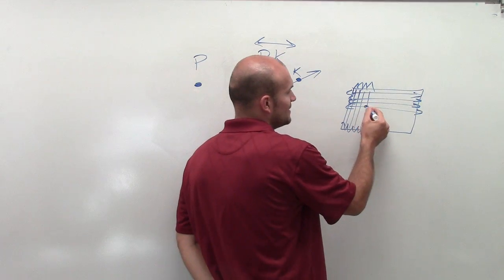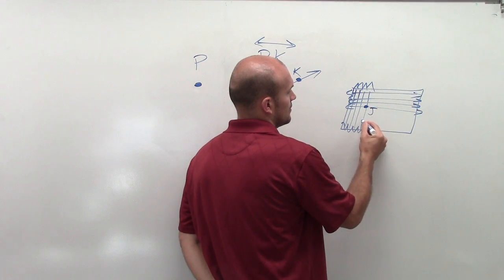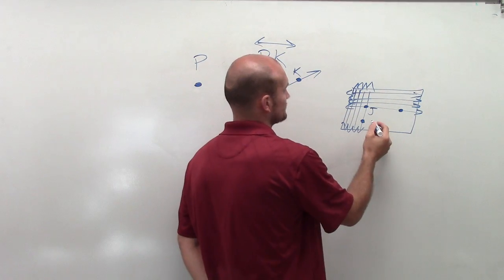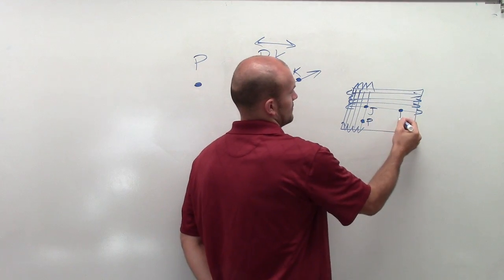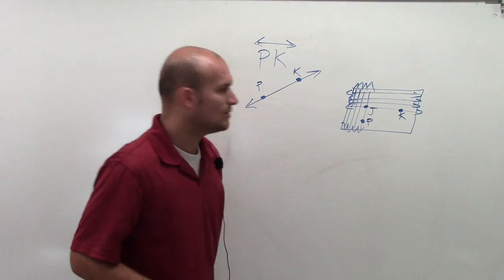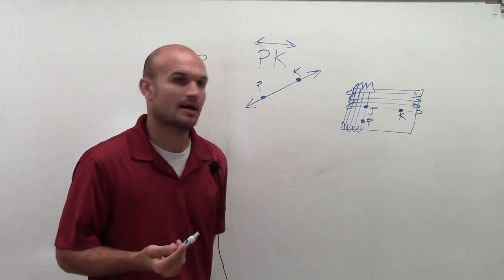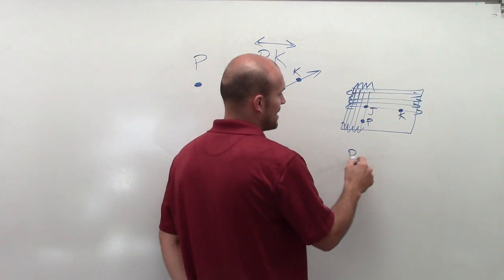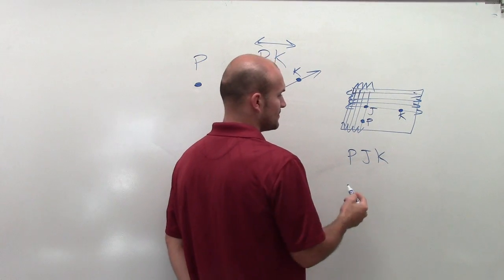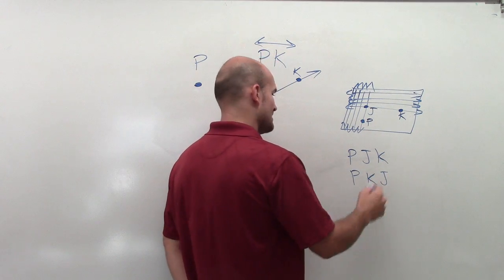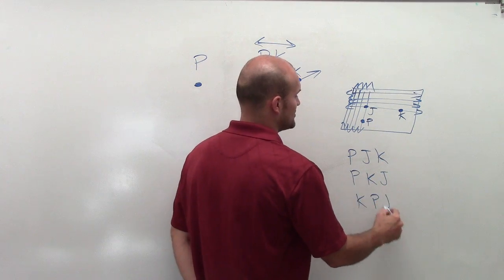Well, for a plane, all we need is three points in a plane to describe our plane. So I can label my plane as P, J, K. I can label it as P, K, J. I can label it as K, P, J.